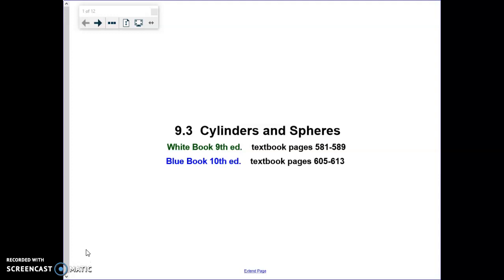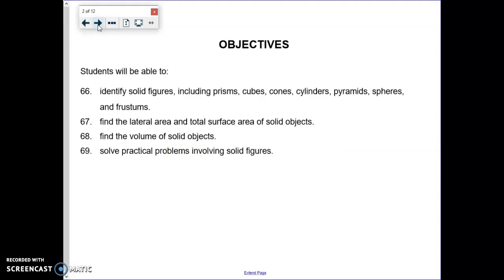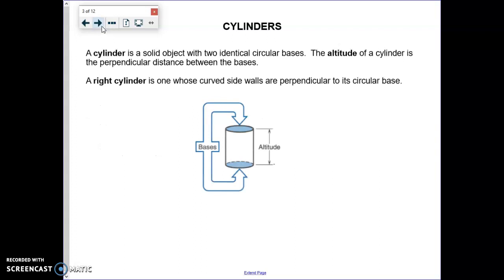Let's get started. Chapter 9, Section 3 is about cylinders and spheres. Here are your objectives - they've been the same the last few sections. We're gonna identify solid figures, especially cylinders and spheres. We're gonna look at lateral area, total surface area, and volume of these solid objects, and then look at a couple practical problems. If you want to pause the video and read through this, underline some important things, take some notes, go ahead.